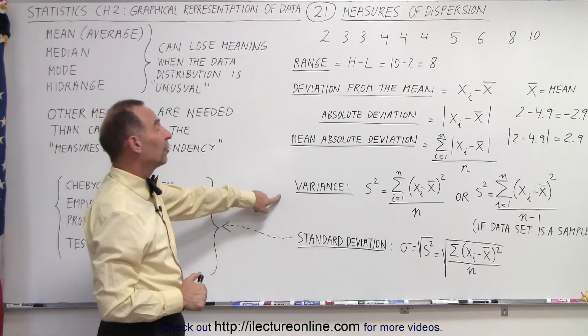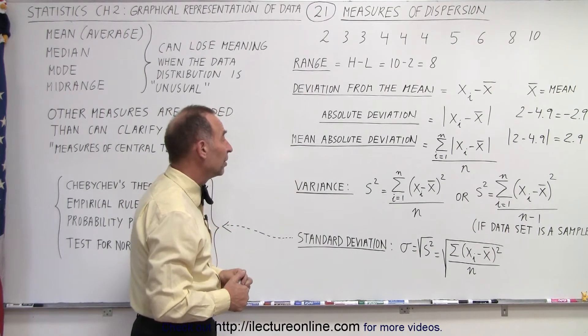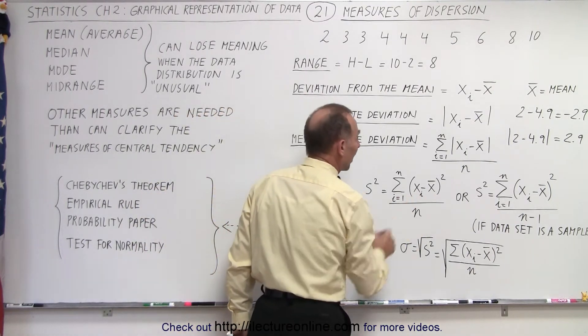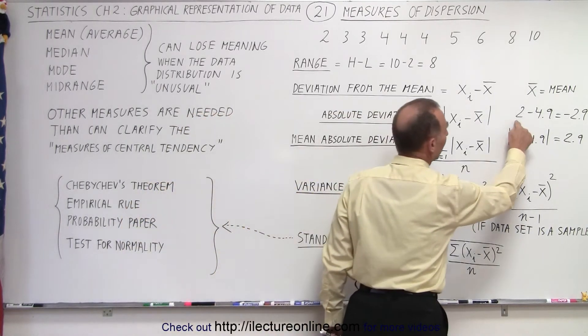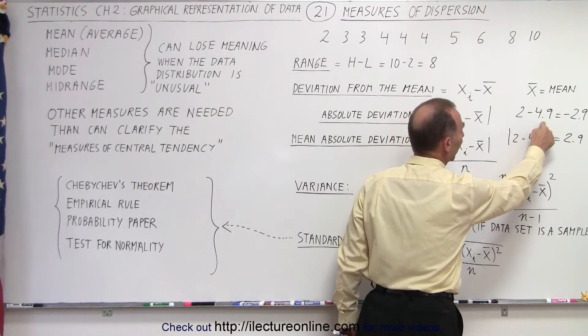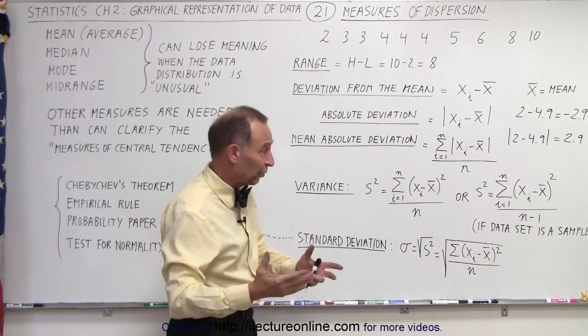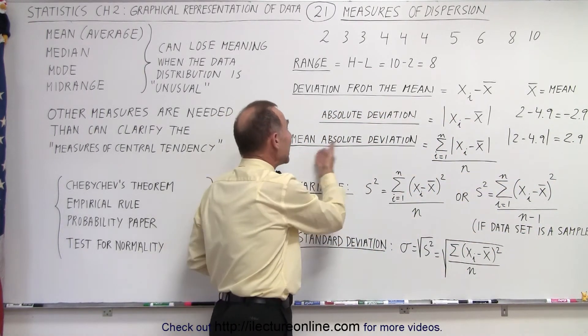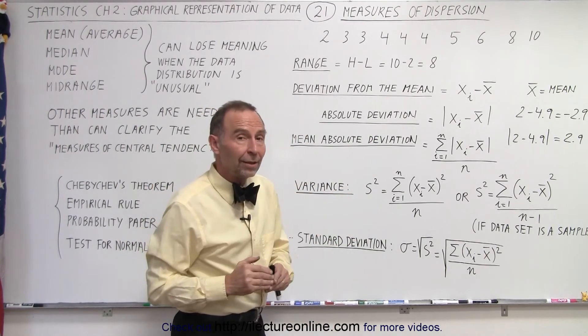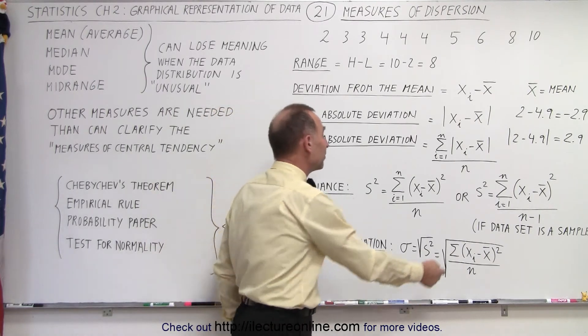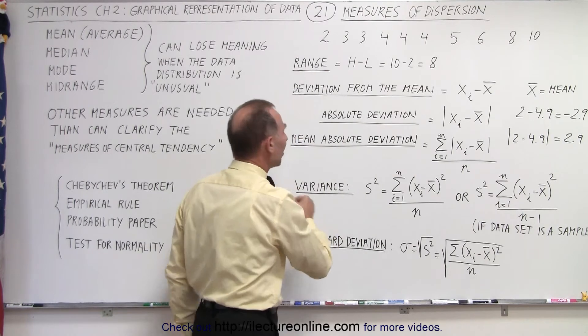The variance: we take the mean absolute deviation and we square each of those values. So we take the difference between any one of our data points and the average value. When we square it, we don't care if that number was negative or positive since we square it. So we don't care if it's the mean absolute deviation. We simply take the deviations. We square them all. We then add them all up and divide by the total number of data points. And that gives us the variance.